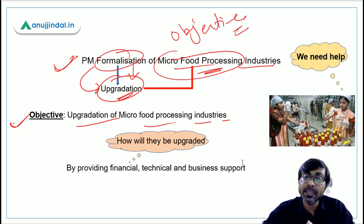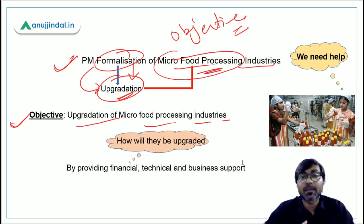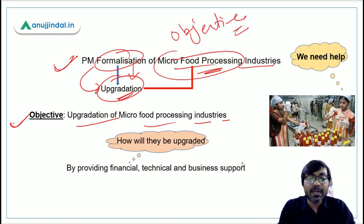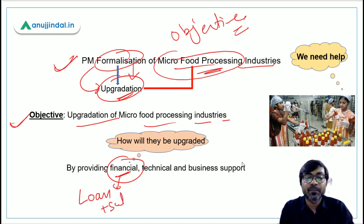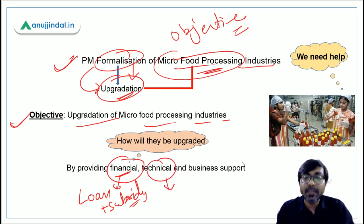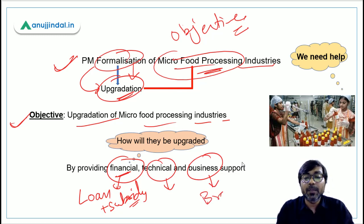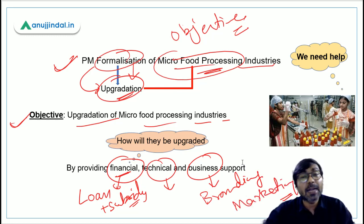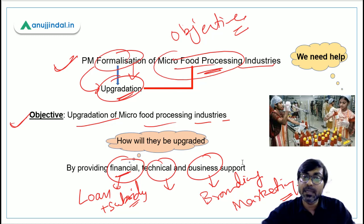Any enterprise or industry needs three things to grow: technical support, financial support, and business support like branding and marketing. Under this scheme, micro food processing units will be upgraded by providing financial support — loans and subsidies — technical advancement support, and business support including branding and marketing. This is how the Government of India will upgrade these industries.